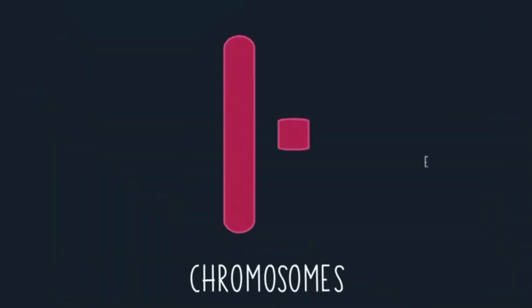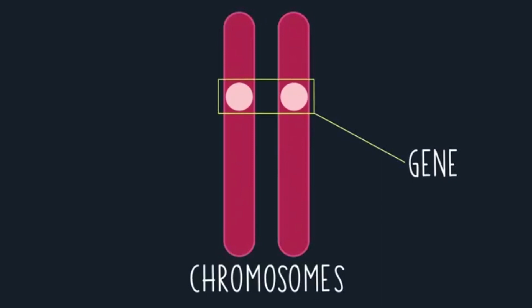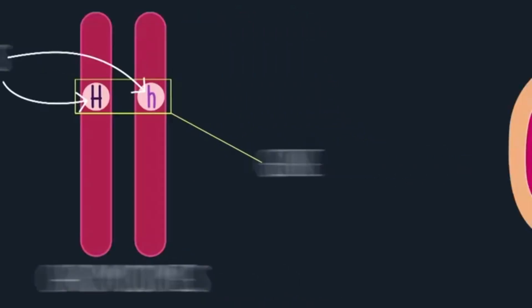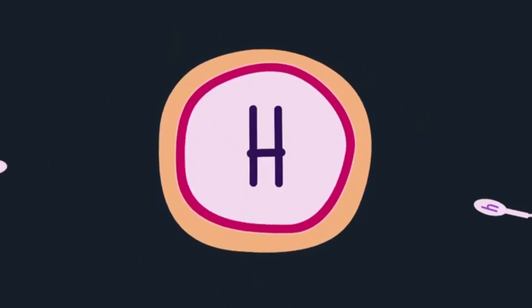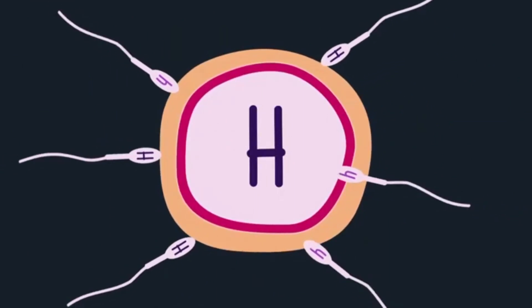The different forms of a gene for a particular characteristic are called alleles, and they're represented using letters. For example, in cats, uppercase H for short hair and lowercase h for long hair. Every organism inherits two alleles for each gene, one from each parent.